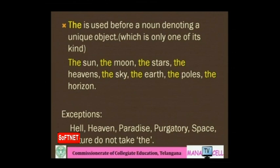'The' is used before a noun denoting a unique object — one of its kind: the sun, the moon, the stars, the heavens, the sky, the earth, the poles, the horizon. But there are exceptions — hell, heaven, paradise, purgatory, space, and nature generally do not take 'the'. Do not use 'the' before these words.